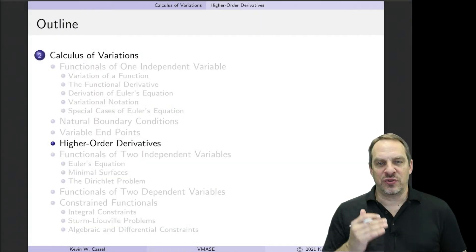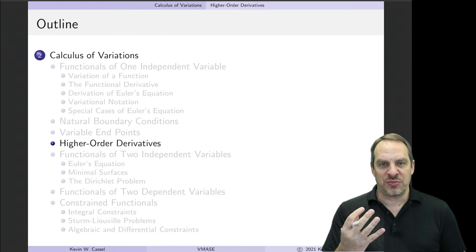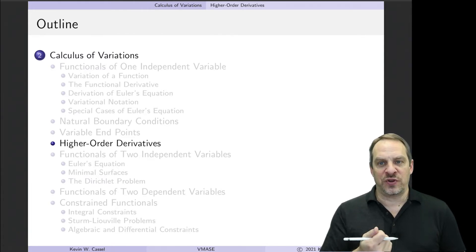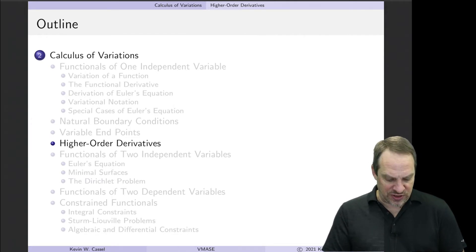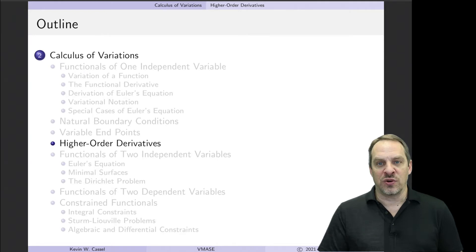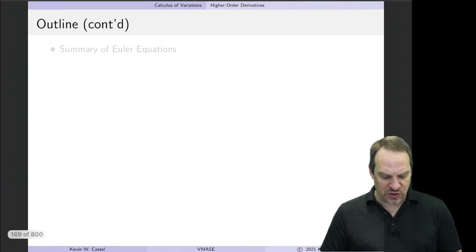So in this sequence of videos, we're working through a set of extensions to the baseline problem that we did in section 2.1, where we had an Euler equation for a functional involving x, u, and u prime, and fixed boundary conditions. So we looked at the natural boundary conditions, and we talked about dual functionals in that context. And now in this very short video, we're going to look at higher order derivatives.